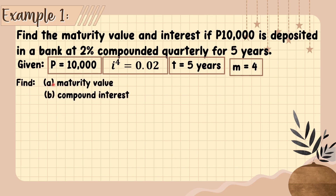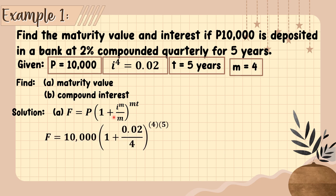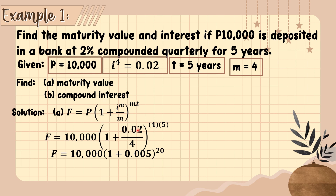For the solution, we substitute into the formula. F = 10,000 times (1 + 0.02/4) raised to (4 × 5). First, 0.02 divided by 4 equals 0.005, and 4 times 5 equals 20. Then we add: 1 + 0.005 = 1.005, raised to the power of 20.